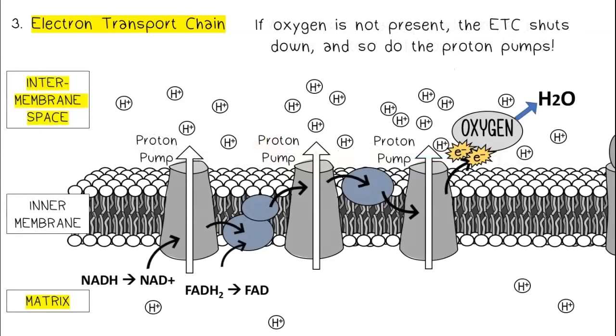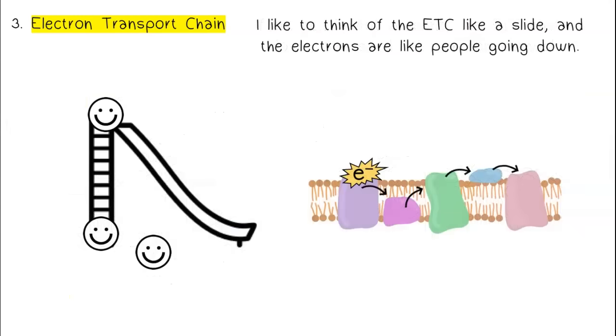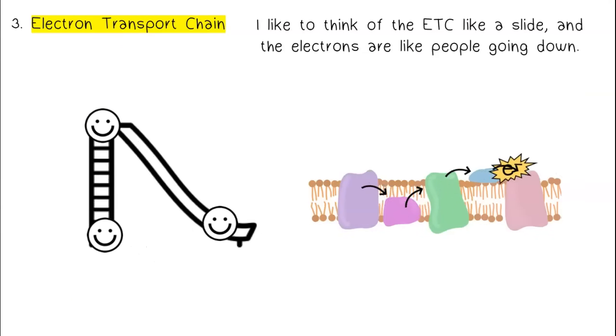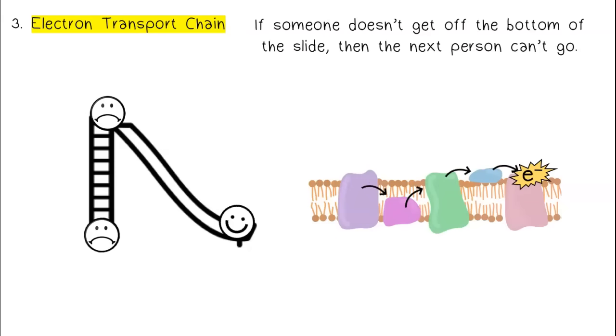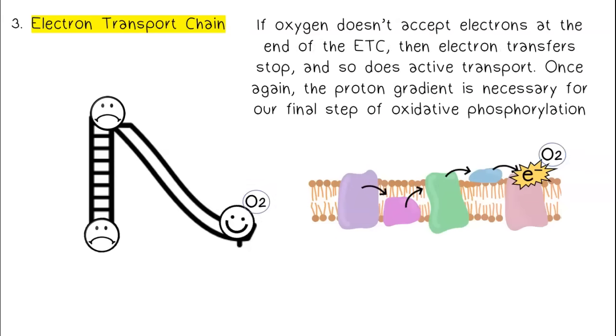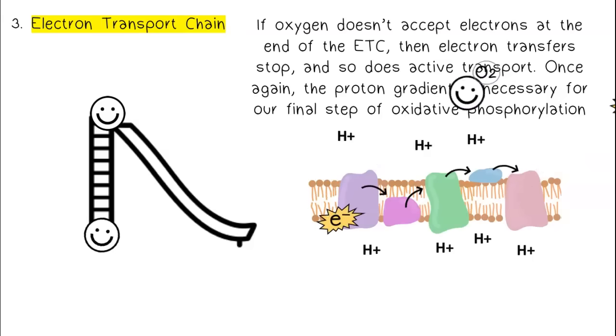If oxygen is not present, the ETC shuts down, and so do the proton pumps. I like to think of the ETC like a slide, and the electrons are like people going down. If someone doesn't get off the bottom of the slide, then the next person can't go. If oxygen doesn't accept electrons at the end of the ETC, then electron transfers stop, and so does active transport.